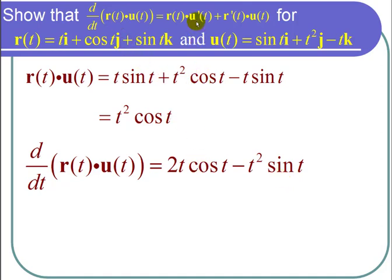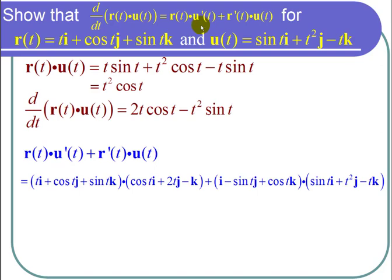Now let's work on the right-hand side. I find r of t dot u prime of t, and u prime of t is cosine of t i plus 2t j minus k. Then I take r prime of t, which is i minus sine of t j plus cosine of t k, and I dot that with u of t, which is sine of t i plus t squared j minus t k.